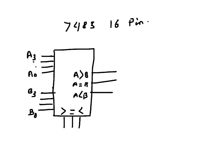If A is greater than B, this one will be high and these will be low. If A equals to B, this one will be high, these two will be low, and like that.